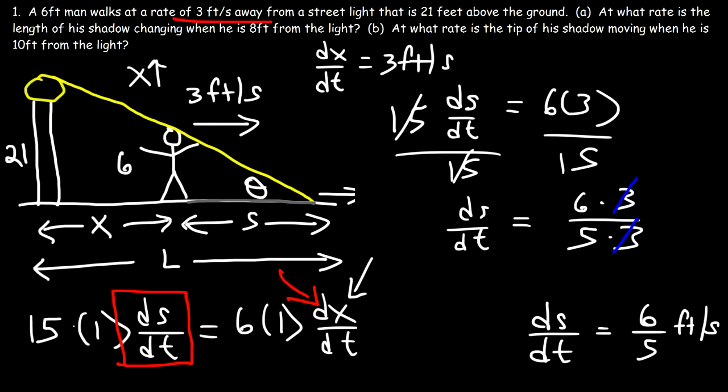So that's the rate at which the length of the shadow is changing. Every second, it changes by 6 over 5 feet, or 1.2 feet. Now let's move on to part B. At what rate is the tip of his shadow moving when he is 10 feet from the light? So this time, we need to calculate dL/dt. How can we do that?